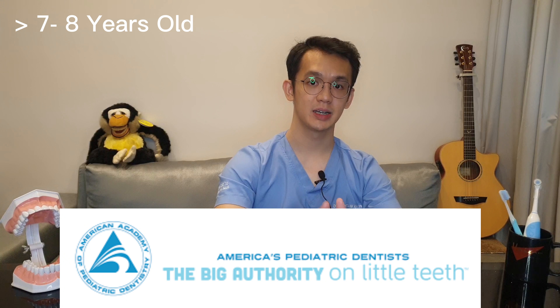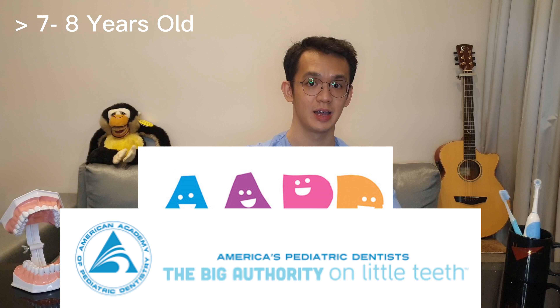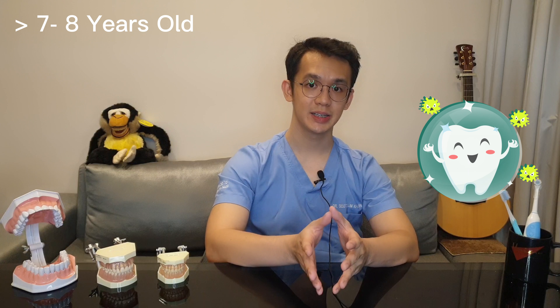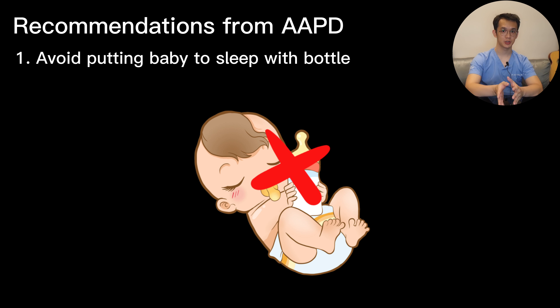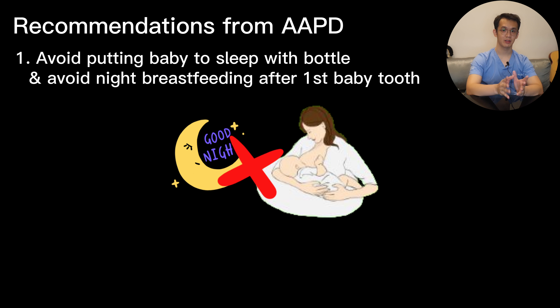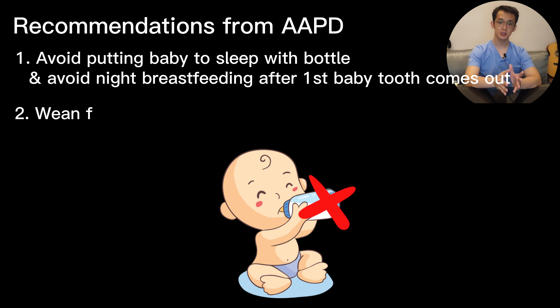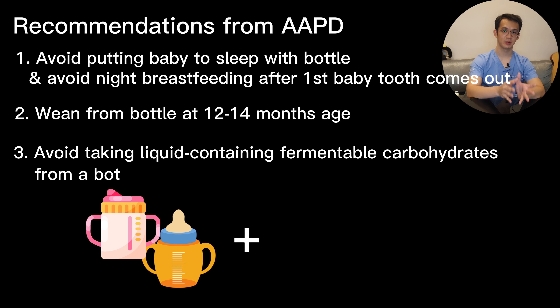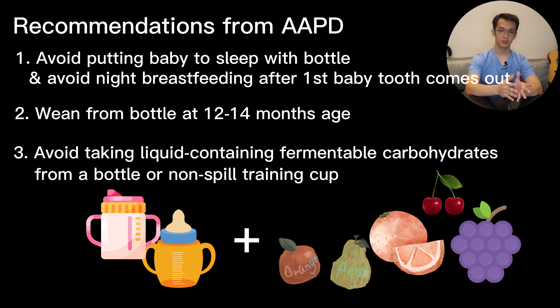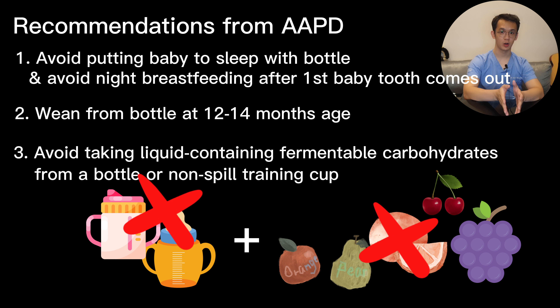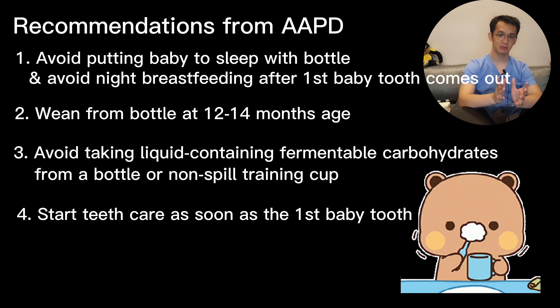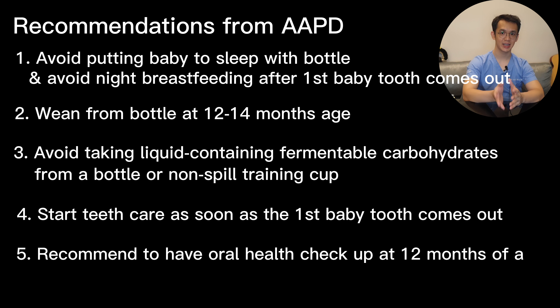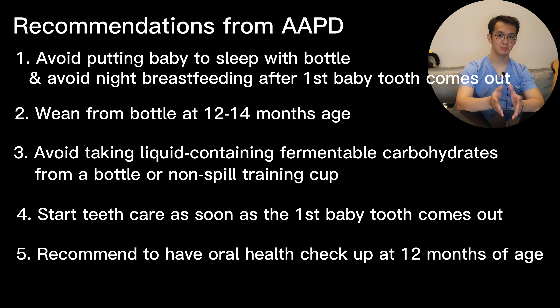Here are 5 quick points from the American Association of Pediatric Dentistry on how to prevent early decay in your kids. First, don't put baby to sleep with a bottle, and avoid night breastfeeding after the first baby tooth comes up. A baby should wean from the milk bottle at around 12 to 14 months old. Avoid frequent consumption of liquids containing fermentable carbohydrates from a bottle or non-spill training cup. Start teeth care as soon as the first baby tooth comes up, and recommend an oral healthcare checkup at 12 months of age to educate parents and provide guidance for prevention of dental diseases.